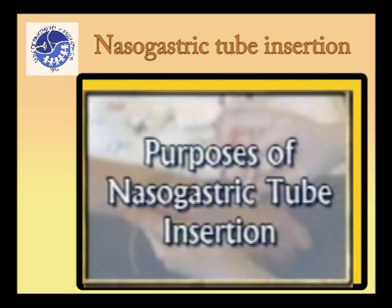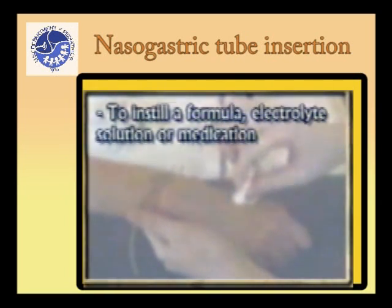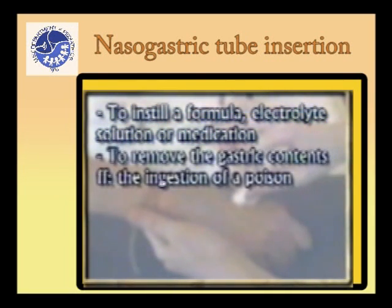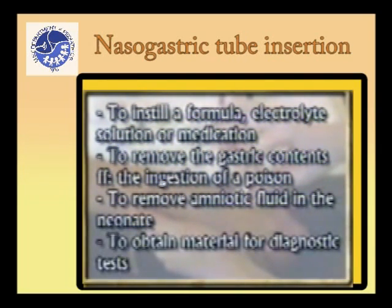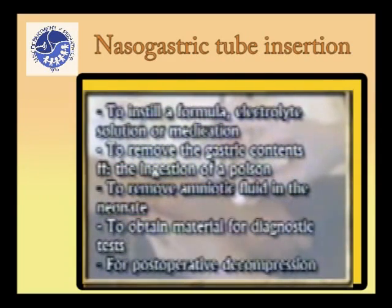The following are purposes of nasogastric tube insertion: to instill a formula, electrolyte solution or medication; to remove the gastric contents following the ingestion of a poison; to remove amniotic fluid in the neonate; to obtain material for diagnostic tests; and for post-operative decompression.